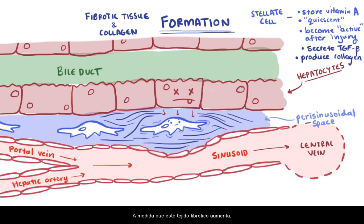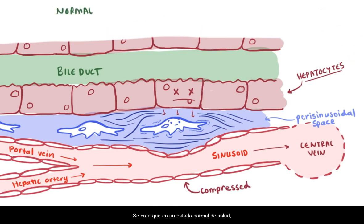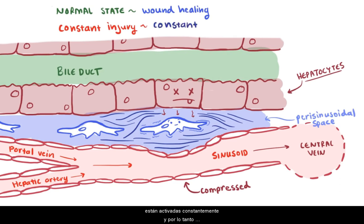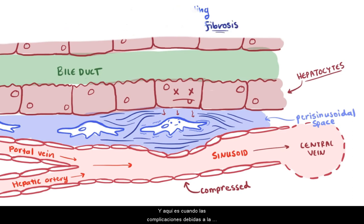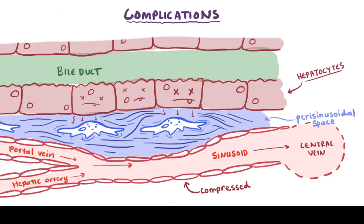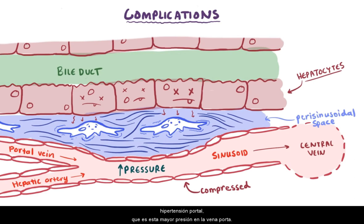As this fibrotic tissue builds up, it starts to compress the central veins and sinusoids. It's thought that in a healthy, normal state, these stellate cells play key roles in the natural wound healing process. But when liver cells are constantly injured, the stellate cells are constantly activated, so they constantly produce collagen and factors that lead to fibrosis. This is when complications due to cirrhosis start to crop up. As those central veins and sinusoids become compressed, their pressure starts to build up, leading to intra-sinusoidal or portal hypertension — higher pressure in the portal veins.